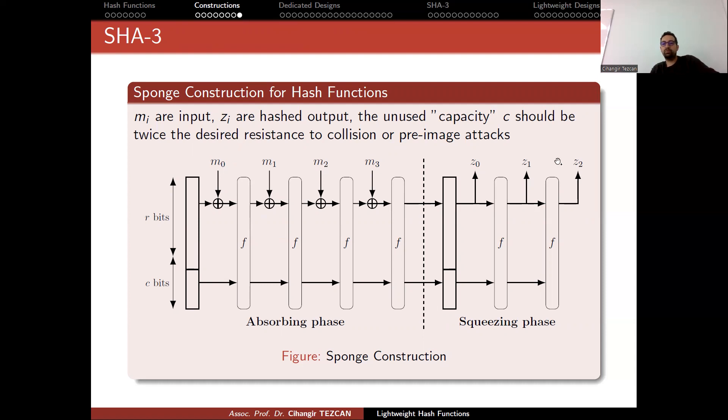z_i are hash outputs. Here, we have two terms called capacity and rate represented with c bits and r bits. I will explain in a minute. The unused capacity should be twice the desired resistance to collision or pre-image attack. So this is generally what we have as security proof. Sometimes these proofs are improved.